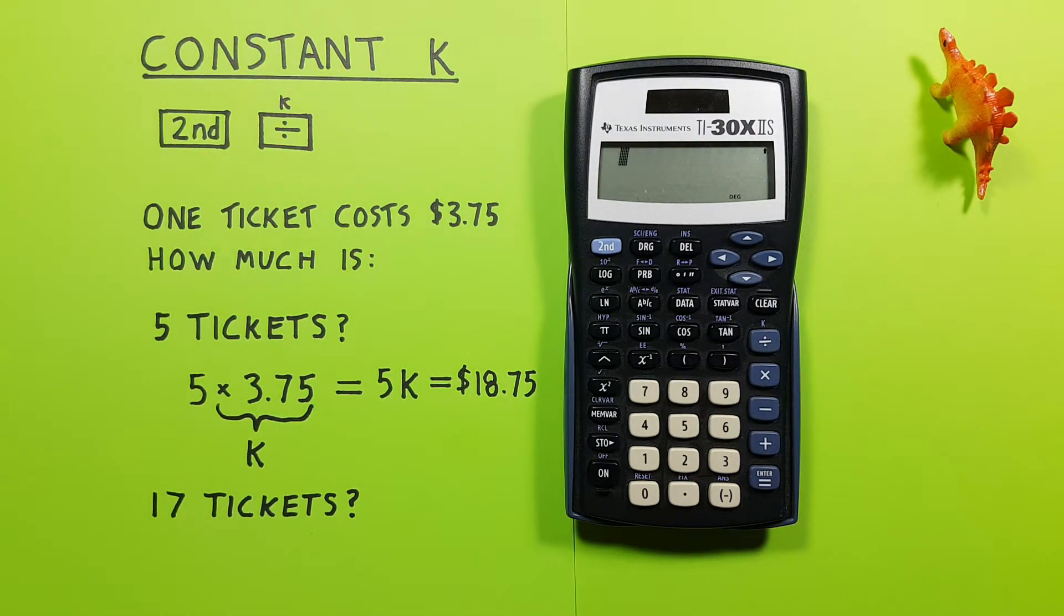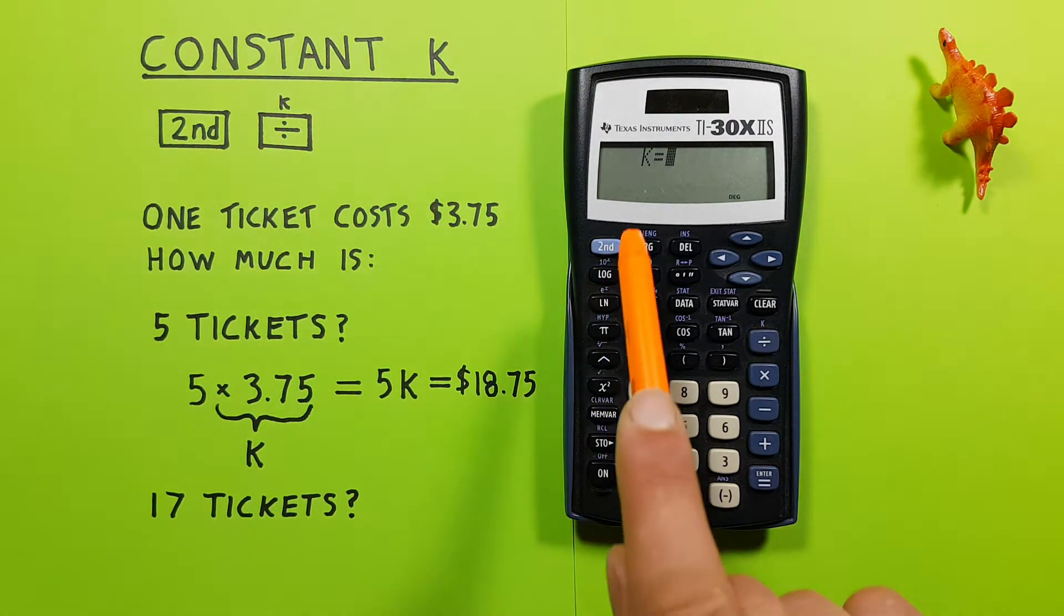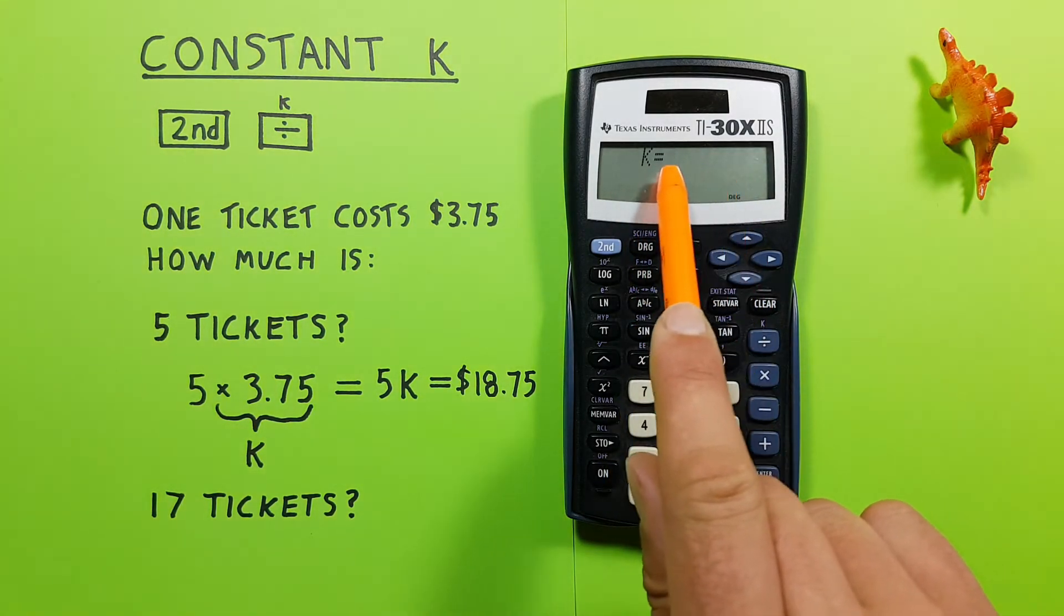What the K function does is allow us to enter a function that will be automatically applied to the end of whatever we have on our screen. We can access it by pressing the second division key. There we go. And that brings us to this K equals where we can enter our constant.